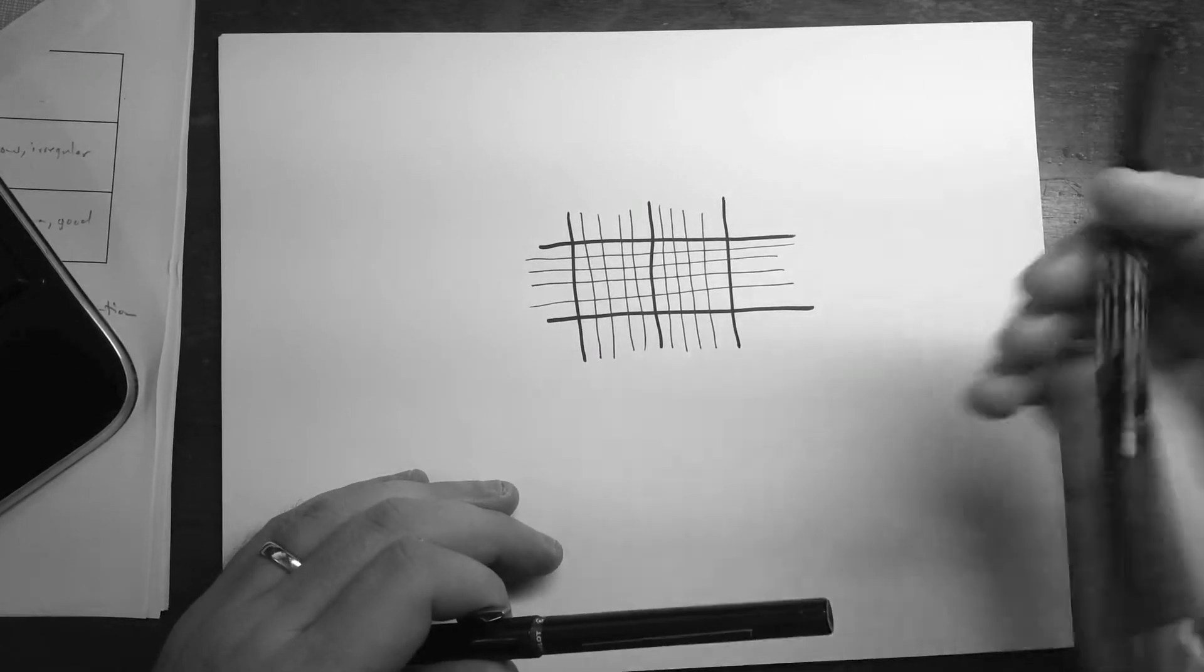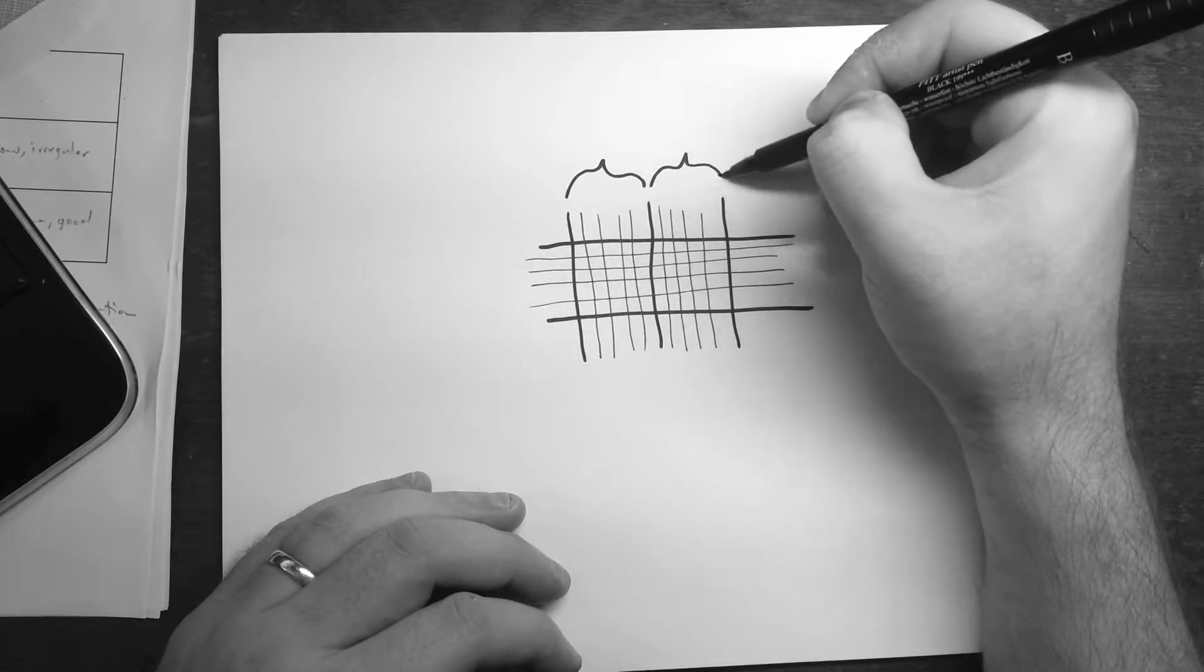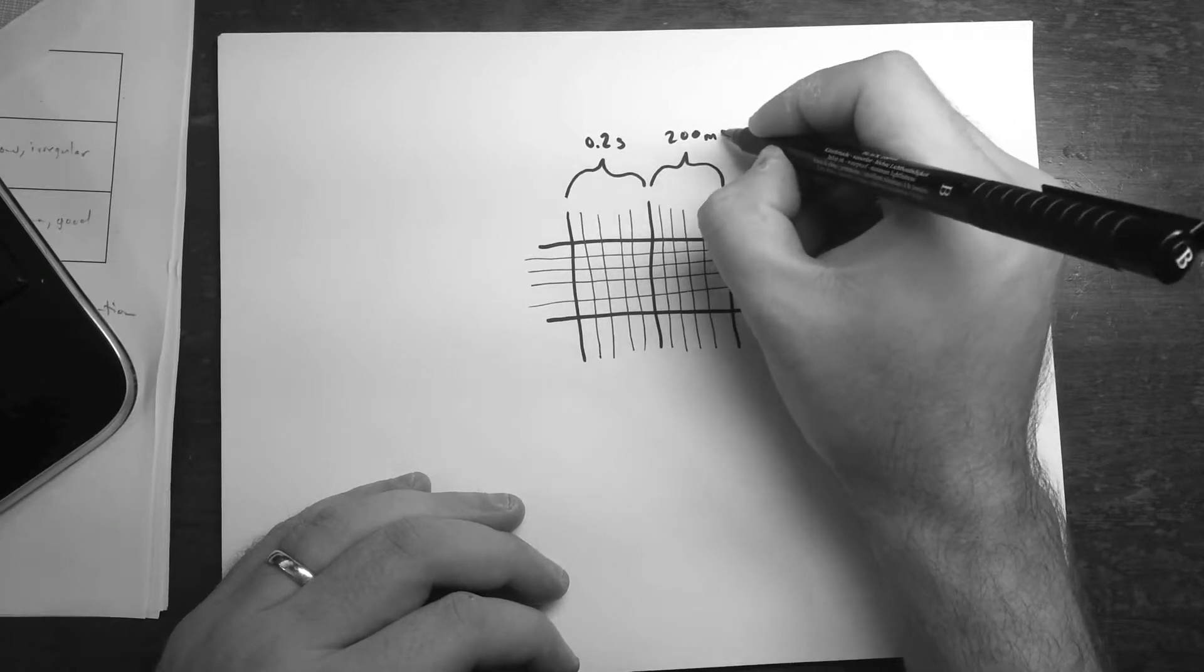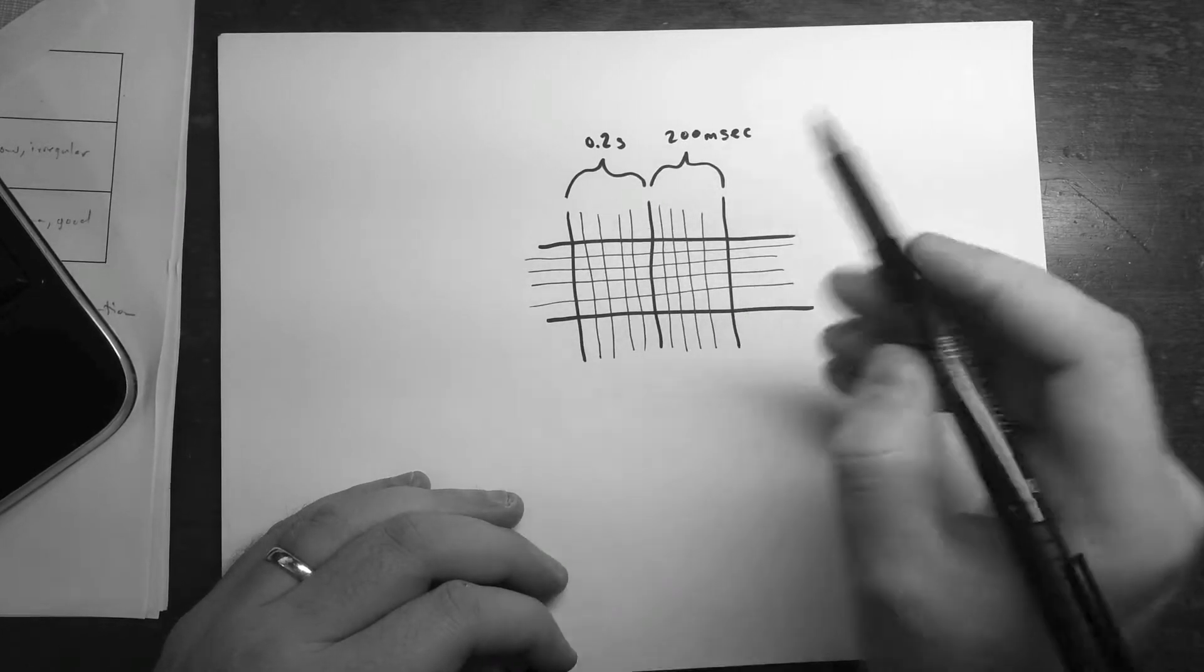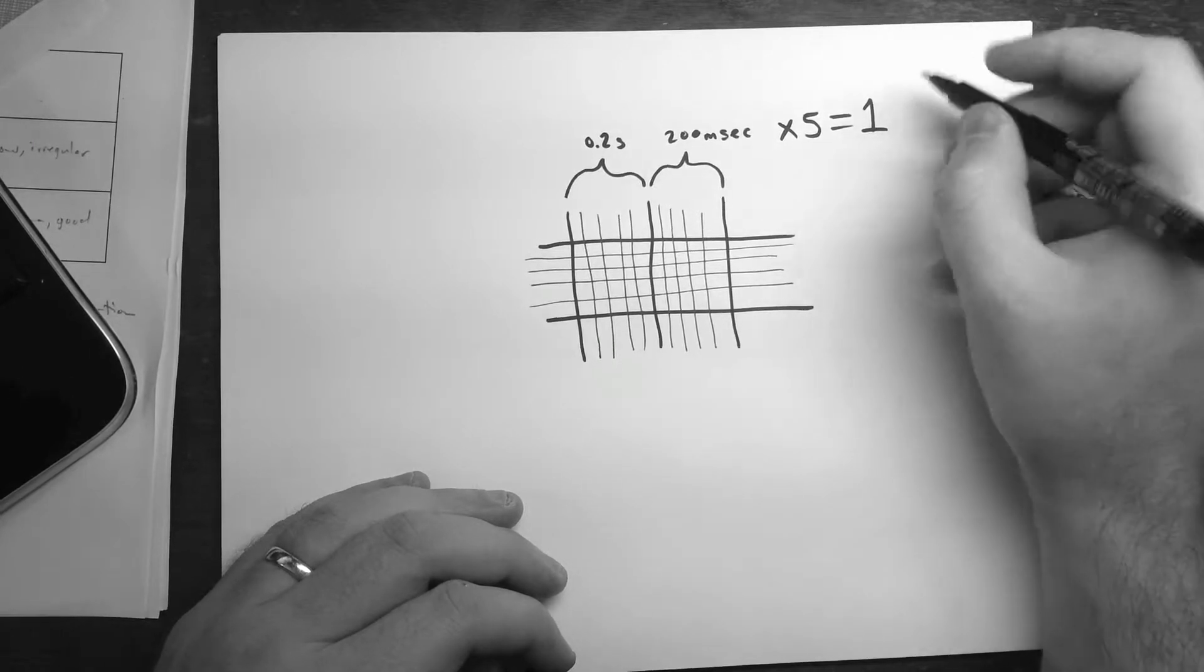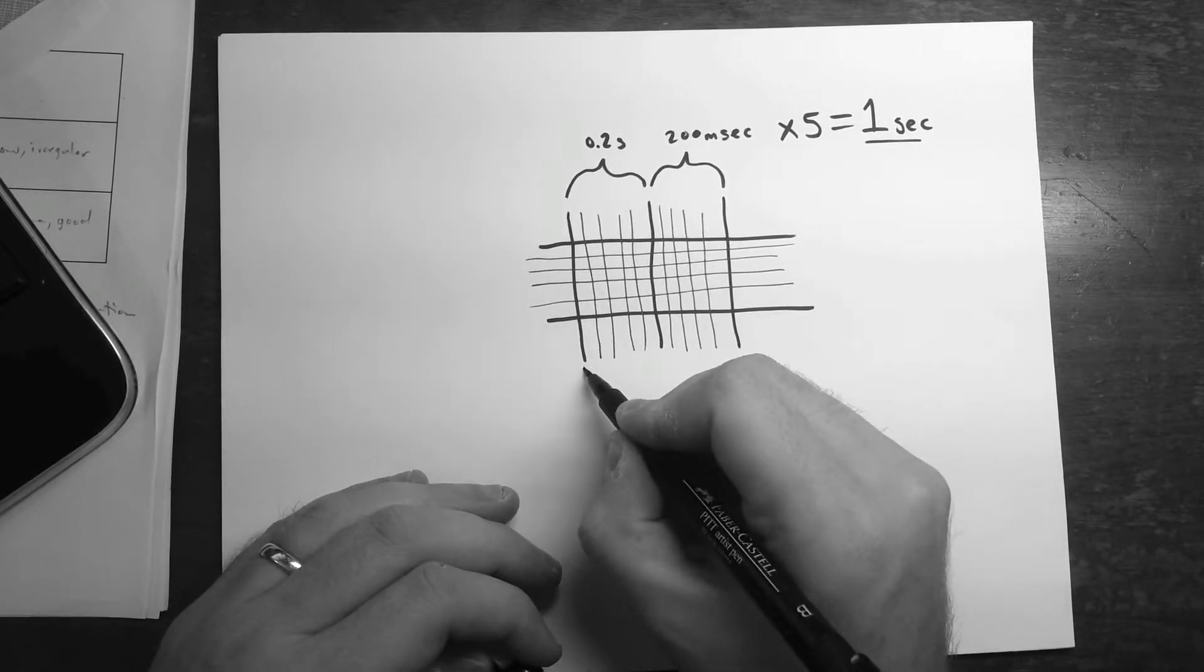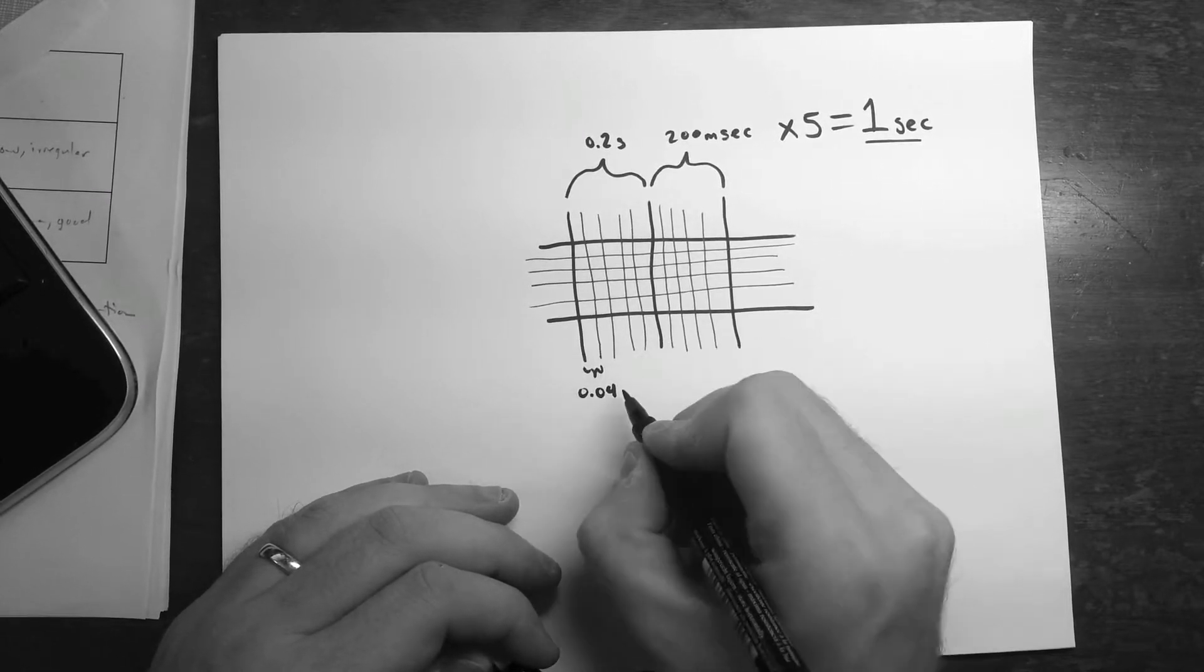So each one of these big squares here represents 0.2 seconds or 200 milliseconds. And so if you add up five of these, you get one second worth of time. And each one of these smaller squares within it is exactly 0.04 seconds.